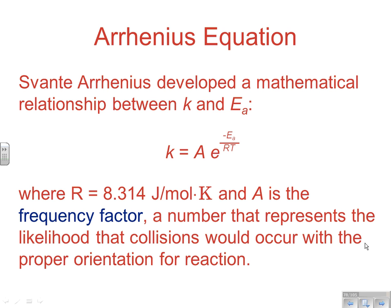The person who studied this and gave us a way to analyze these energy situations was Arrhenius — yes, the same Arrhenius who gave us the simple acid-base definition. He developed an equation that is really the focus of today's work: a mathematical relationship between the rate constant k and the activation energy Ea. In the Arrhenius equation, A is the frequency factor — a number representing the likelihood that collisions will occur with the proper orientation for the reaction.